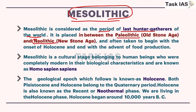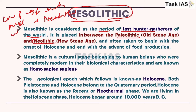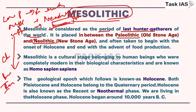In lower Paleolithic, human being was Homo erectus, and in middle Paleolithic it was Neanderthal. When we reached upper Paleolithic, evolution of modern Homo sapiens took place, and that Homo sapiens sapiens is also continuing. Further evolved cultures - Chalcolithic, Bronze, or Iron Age - are all related with modern Homo sapiens sapiens. So here we are discussing both cultural and biological evolution parallelly.